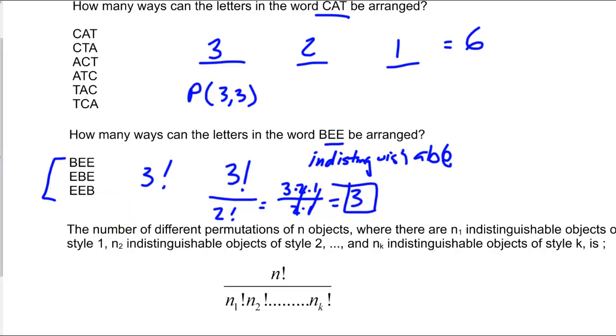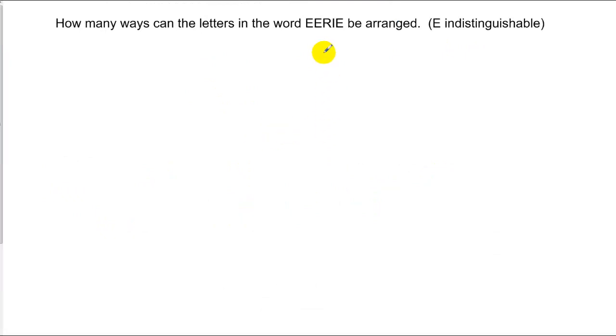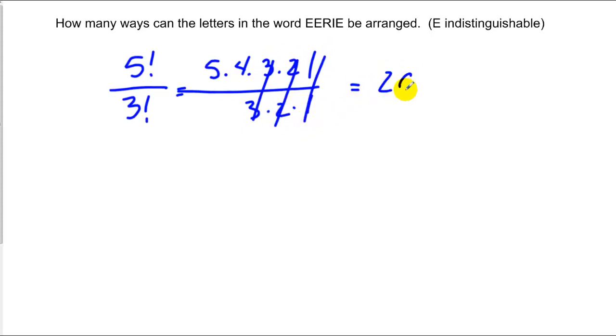Let's do some more practice. Number of ways to arrange the letters in the word EERIE. We've got a total of five items, so that's going to be 5 factorial. E is the only thing repeated, and it's repeated three times, so that's just 5 factorial over 3 factorial. We can work this out without a calculator. Those are reduced out. We get a total of 20 different ways.